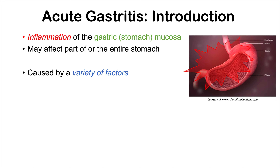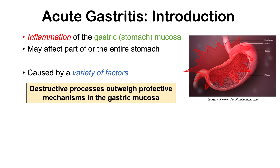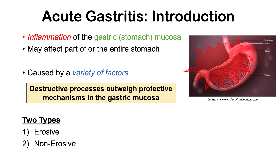Acute gastritis is caused by a variety of factors. We're going to talk about a large list of causes, but they all have something in common: they lead to an imbalance between destructive processes and protective mechanisms, where destructive processes outweigh protective mechanisms in the gastric mucosa. There are also two types — erosive and non-erosive acute gastritis.